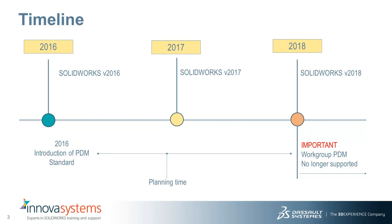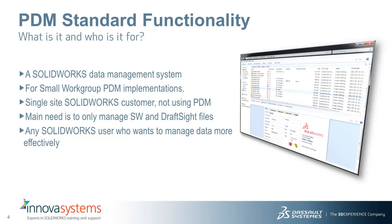With the release of 2018, anyone wanting to use workgroup PDM from this point forward will either need to stay on 2017 or stop using workgroup and use PDM Standard with SOLIDWORKS 2018. So, what is PDM Standard and who is it for? It is a data management system intended for small existing workgroup PDM implementations or single site SOLIDWORKS customers not currently using PDM. It is also designed for anyone whose main need is to manage SOLIDWORKS and DraftSight files, or any SOLIDWORKS user who wants to manage their data more effectively.